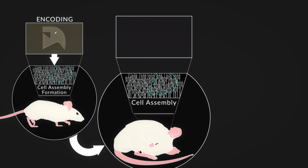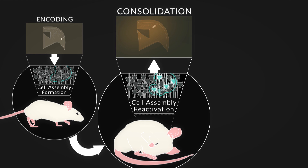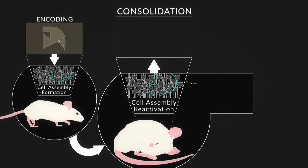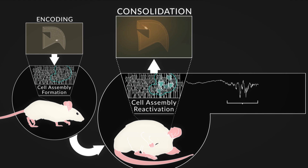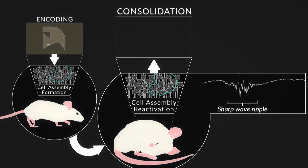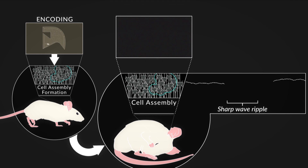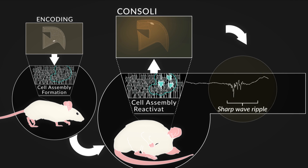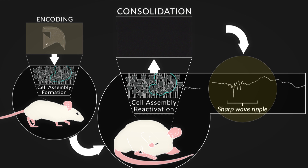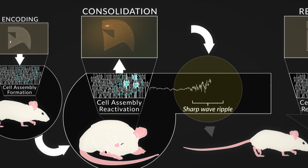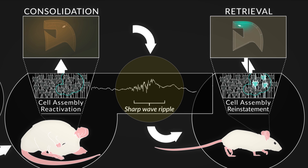During the sleep following the first exploration of a new environment, we found that the cell assembly patterns representing that environment were reactivated during short-lived high-frequency oscillatory events called sharp-wave ripples. Importantly, the strength with which these patterns were reactivated during sleep correlated with how well they were going to be reinstated when the animal was later put back into the same environment.